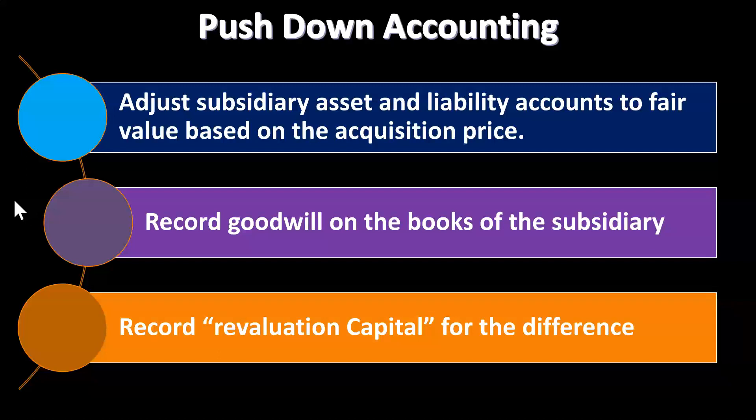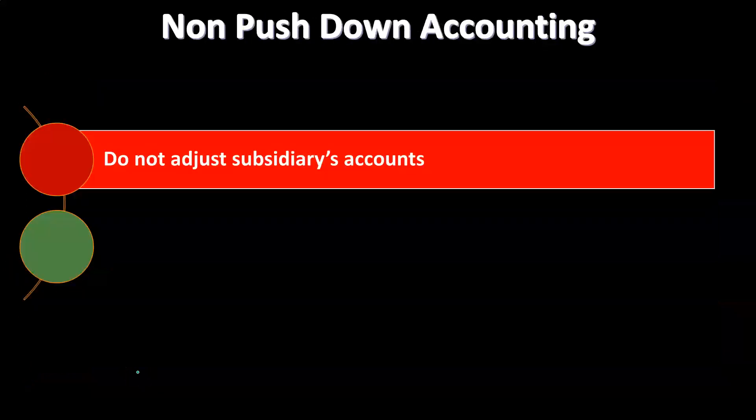Those fair values and goodwill would be recorded on S's books because goodwill has been recognized due to a market transaction. The other side of the entry — the credit when assets and goodwill are debited — goes to a capital account called revaluation capital. Revaluation capital simply means the net value of assets minus liabilities has been revalued due to a purchase taking place, revealing the goodwill and real market value identified through the market transaction.